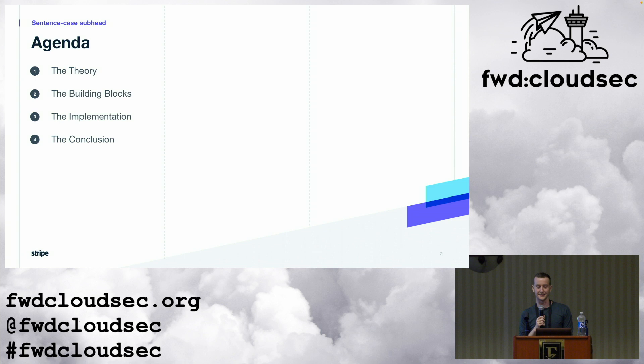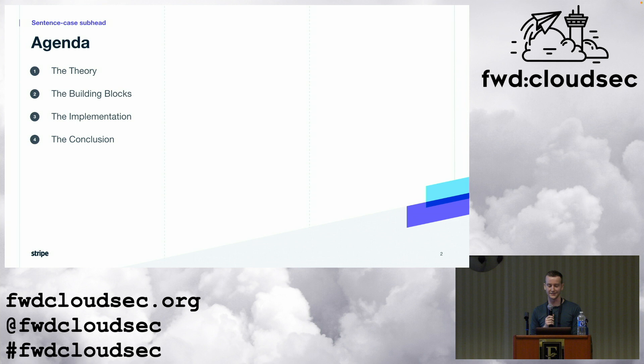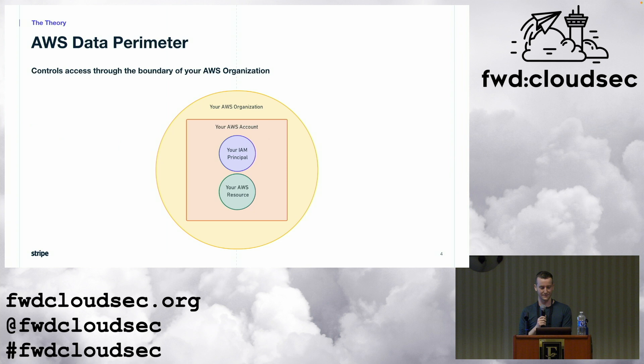Now we'll look at our agenda. First, we're going to go through the theory: what exactly is an AWS data perimeter, what does it do, and why do we need it? Then the building blocks — the perimeter is composed of six different controls; I'm going to talk about three today and leave the rest for you to read about on your own. Next is the implementation: how can you set up these controls without breaking things, or at least breaking as few things as possible? And finally, I'll wrap it up and send you on your way with some helpful resources.